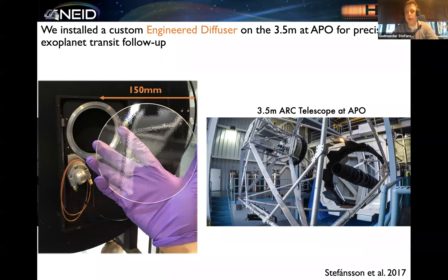These diffuser patterns can also be directly etched onto fused silica glass, which is particularly useful if you want to observe in the near infrared, because then you can actually cool down the diffuser to cryogenic temperatures. We worked with RPC Photonics to build a diffuser for the 3.5-meter telescope at Apache Point, which is about 150 millimeters in diameter, and which I'm showing here installed on the telescope.